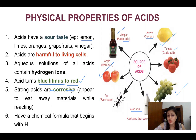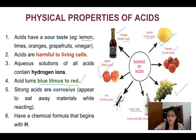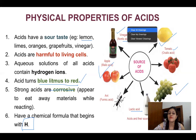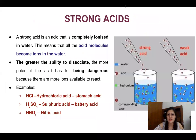Strong acids are corrosive. Strong acids like sulfuric acid (H₂SO₄) and hydrochloric acid (HCl) are available in labs, so you should always be careful because they are corrosive and very reactive — they can harm you. Chemical formulas of acids start with H, like HCl, H₂SO₄, and HNO₃.